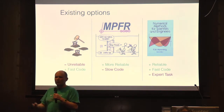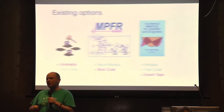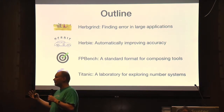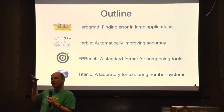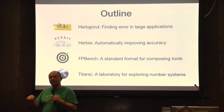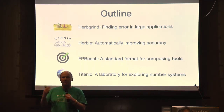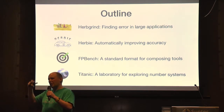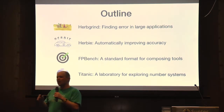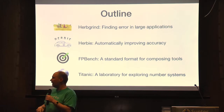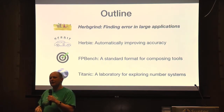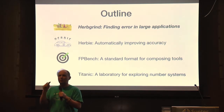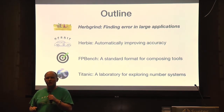So what we've been working toward is figuring out what set of tools might allow us to realize that vision. We've attacked it from a lot of different sides, and today I want to talk about four of our projects that are trying to help make numerics easier to use for normal programmers. I'm going to start off talking about Herbgrind — a dynamic analysis technique to try to identify the root cause of bad numerical error in a large application.